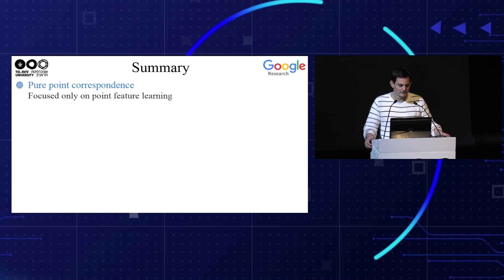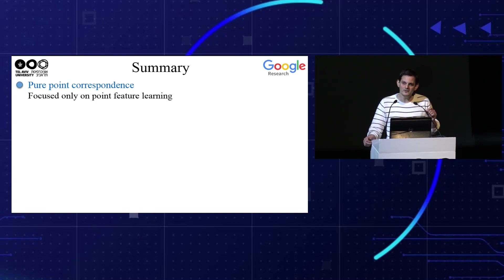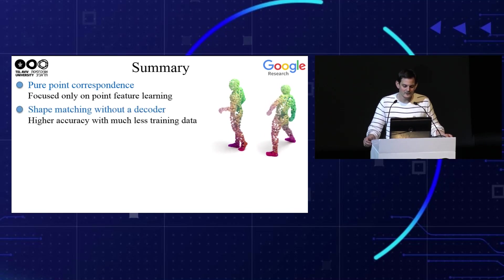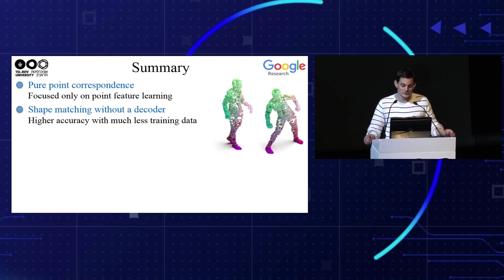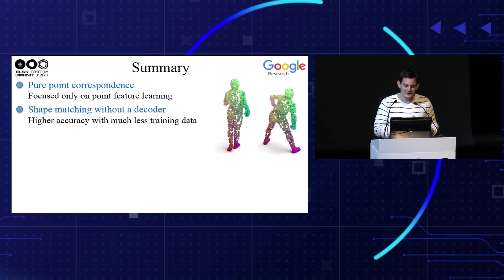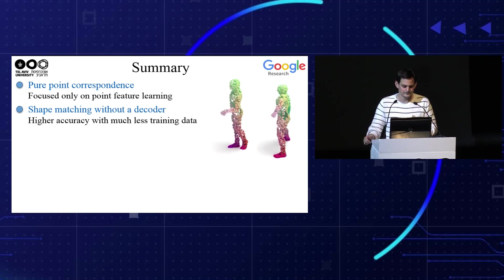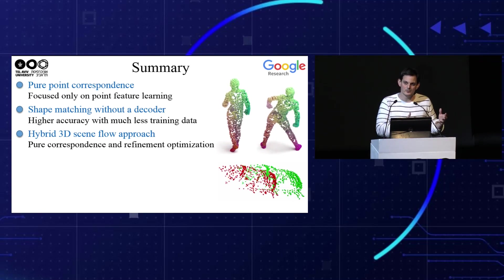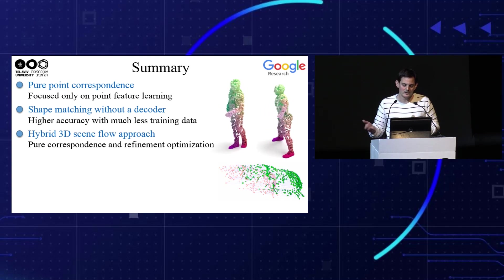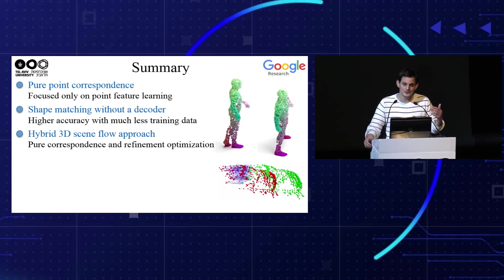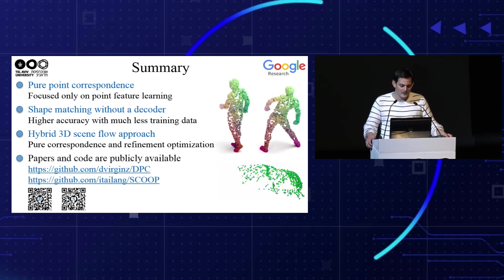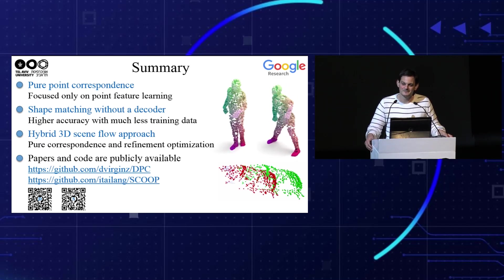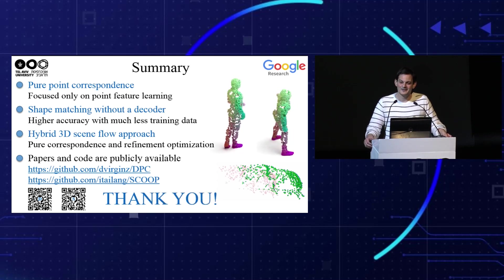To summarize, we talked about pure point correspondence, where the idea is to focus only on point feature learning for computing the correspondence. We showed how to use it for decoderless shape matching, which results in higher correspondence accuracy with much less training data. We also talked about hybrid 3D scene flow that uses a pure correspondence model during training and test time, and refinement optimization instead of regression. Our papers and code are publicly available — I welcome you to take a look. Thank you very much.